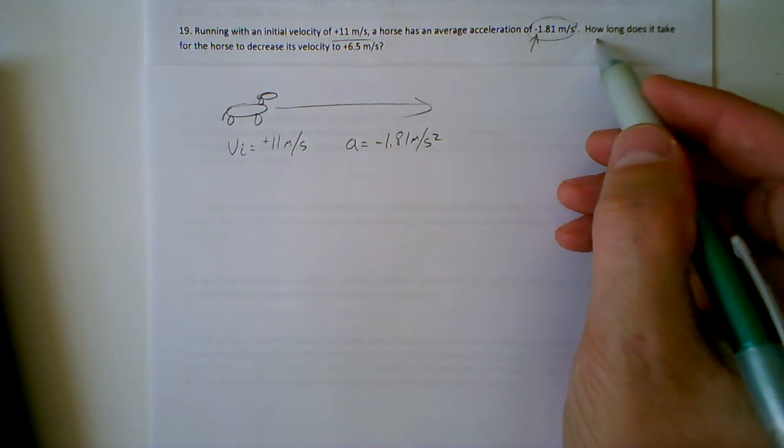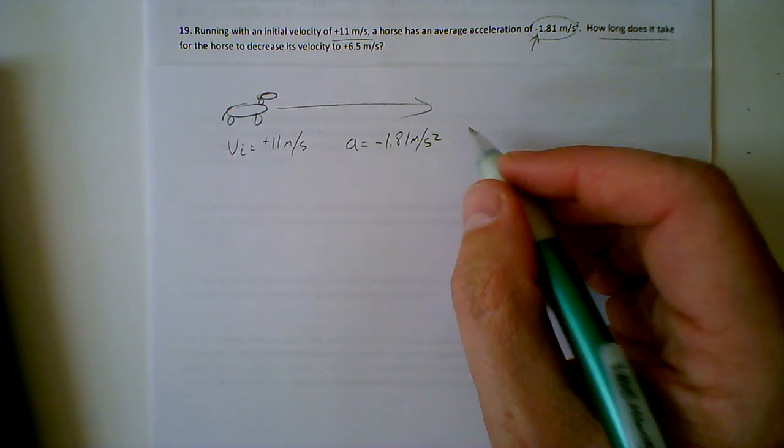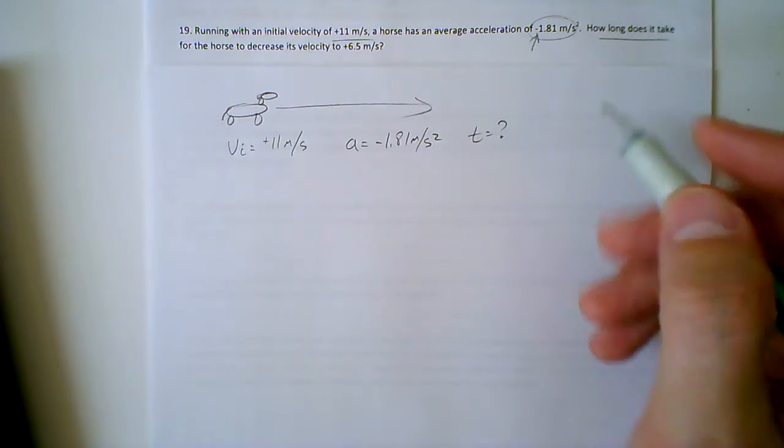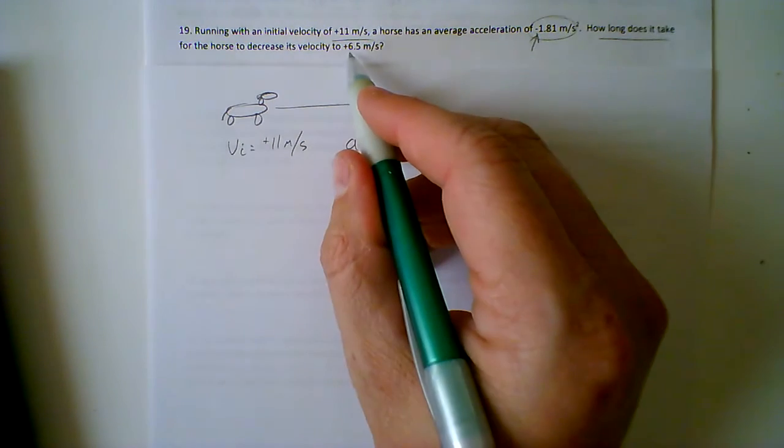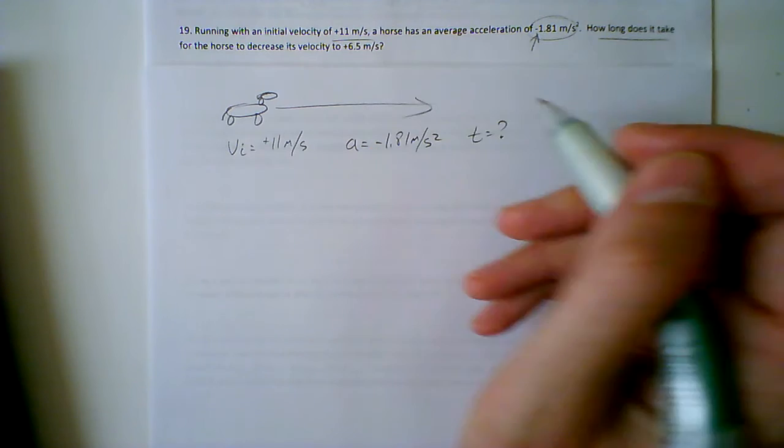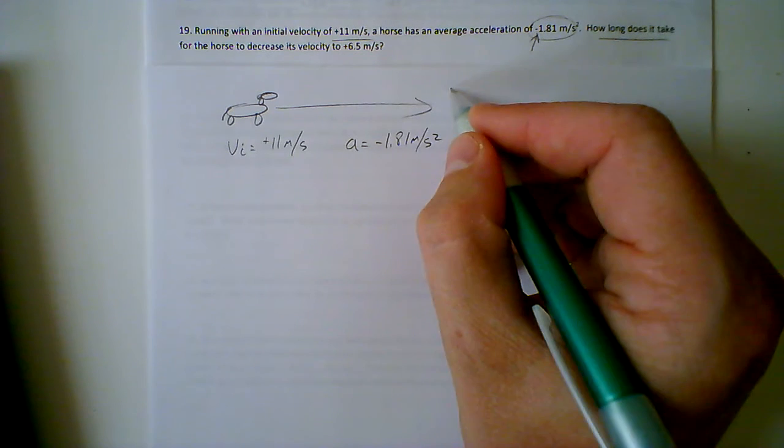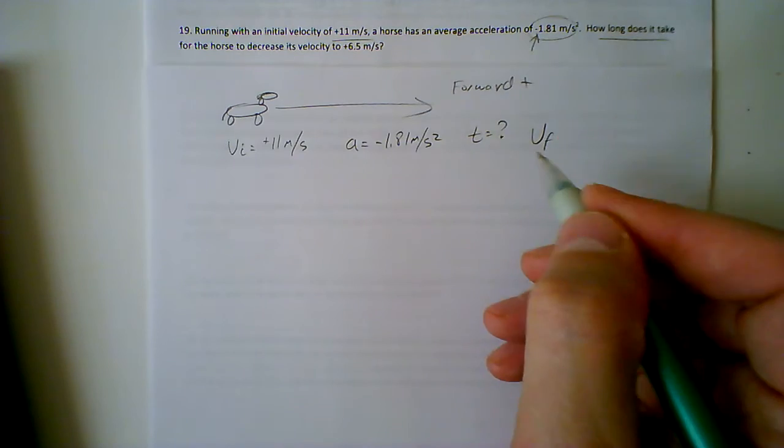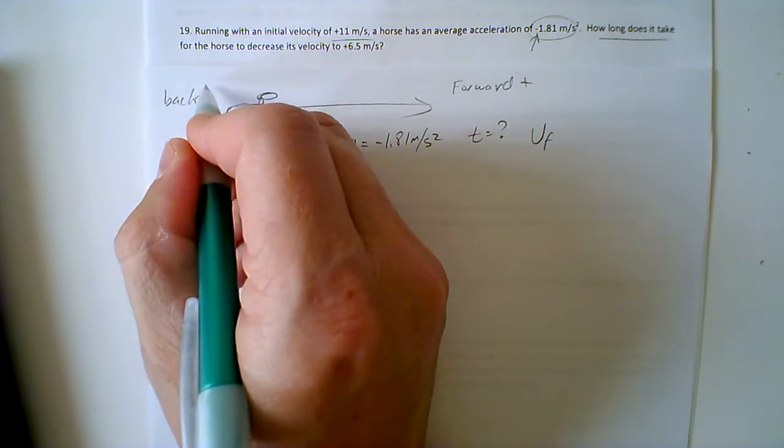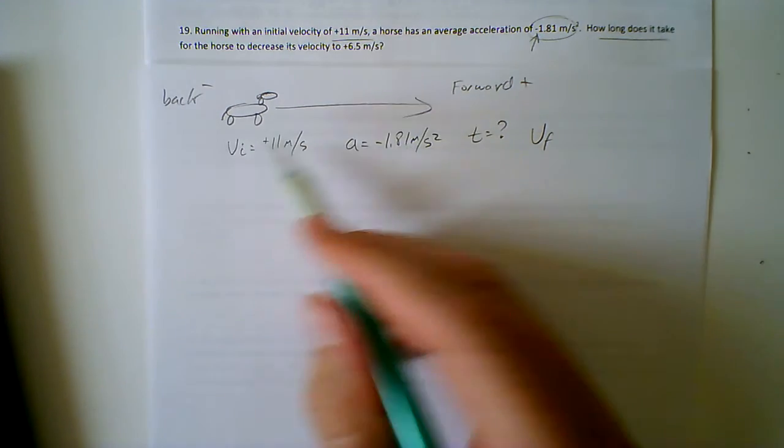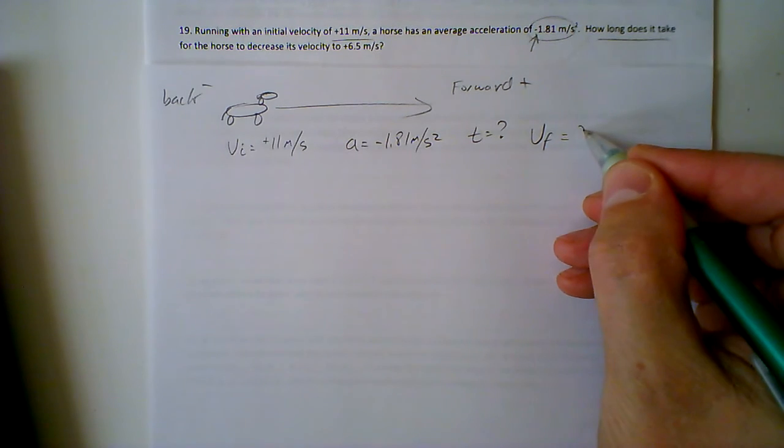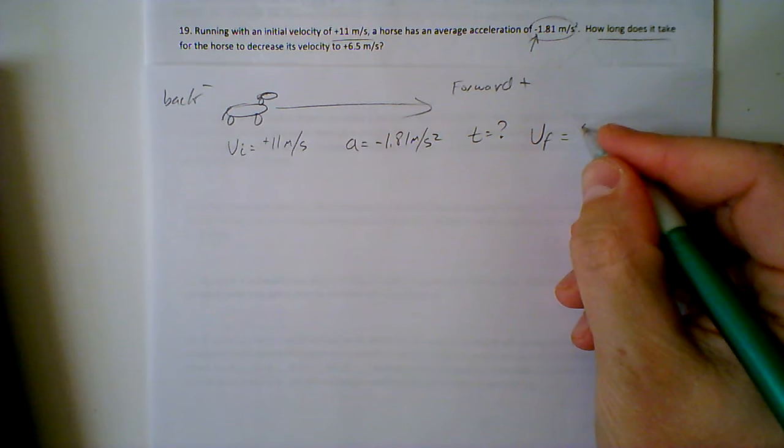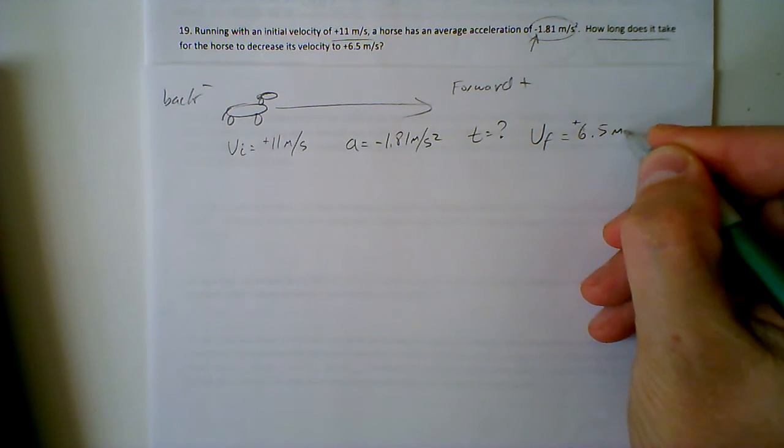How long does it take? So the question here is asking you for a time. How long does it take for the horse to decrease its velocity to positive 6.5 meters per second? So it's not going backwards at the end. It's still going, we're going to just say forward. It doesn't tell you what direction that is. Forward is going to be positive, backwards is going to be negative. So its acceleration is in a backward direction. Vf equals 6.5 meters per second.